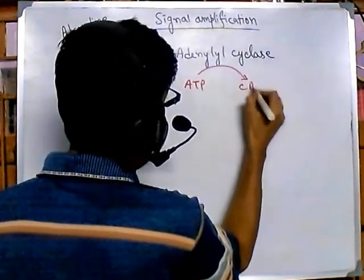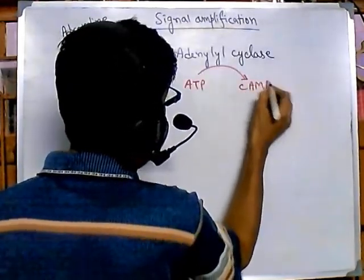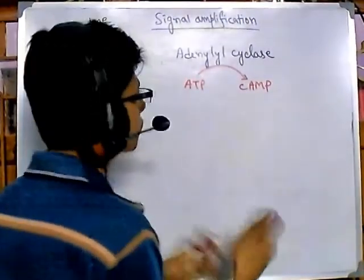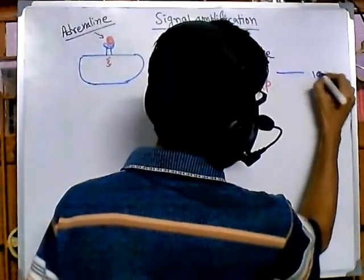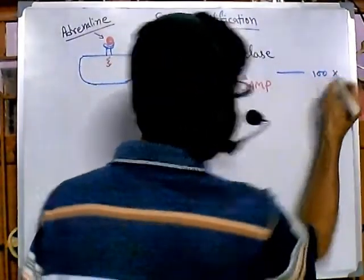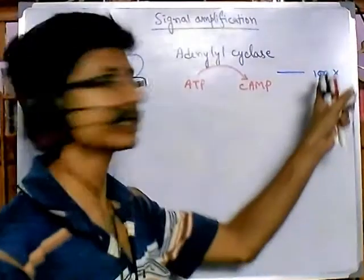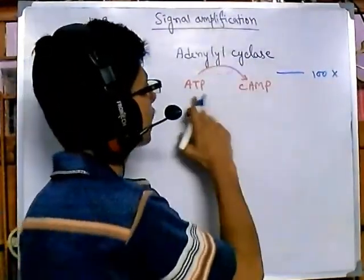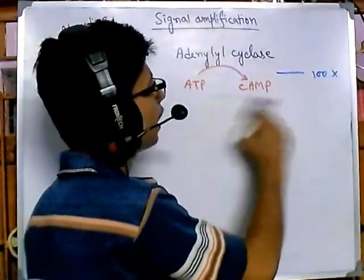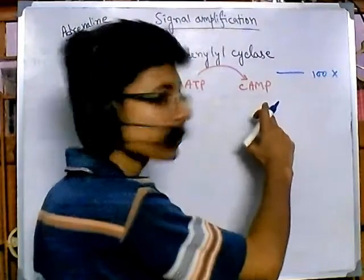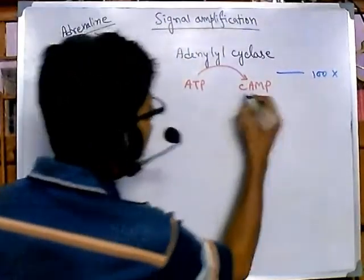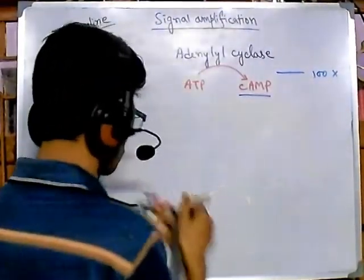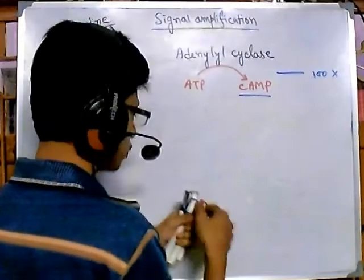Now, one adenylyl cyclase molecule will convert ATP to cyclic AMP, and it increases this process by 100-fold. So one adenylyl cyclase produces 100 cyclic AMP molecules — that is a 100 times increment at this first amplification step.